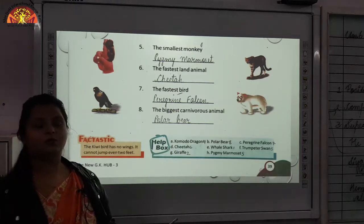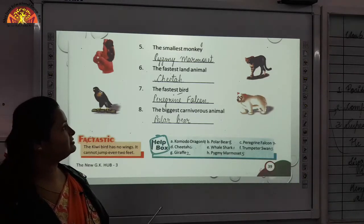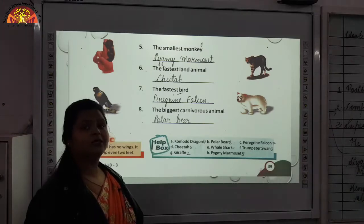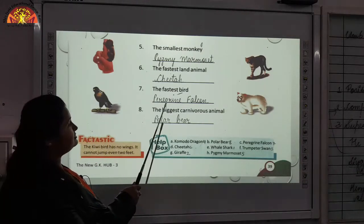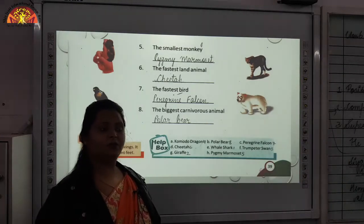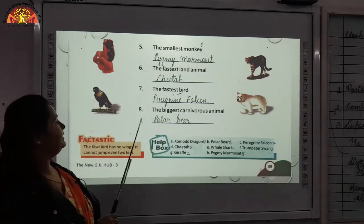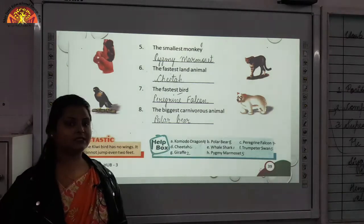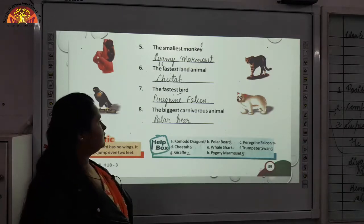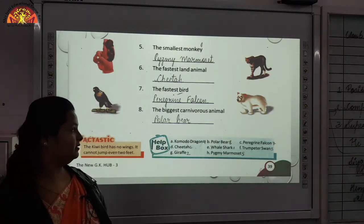Fifth — the smallest monkey. Which is the smallest monkey? Pygmy marmoset. Sixth one — the fastest land animal. You must have read this in class second also. The fastest land animal is cheetah. Then the fastest bird — peregrine falcon. It can fly at a speed of 390 kilometers per hour. Then eighth one — the biggest carnivorous animal is polar bear. Generally, you find this animal in the polar regions. This was all about chapter number 31: Animal Superlatives. Write it down very carefully, be careful while writing and write it very neatly.